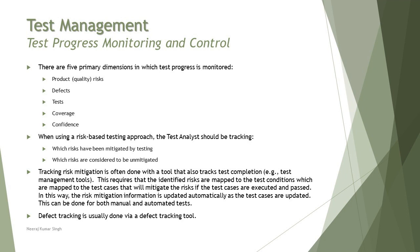If you are applying risk-based testing and managing risk, from the previous tutorial we understood risk identification, risk assessment, risk management, and risk mitigation. Mitigating risks requires tracking how many test cases have been written, how many more are required, how many have passed, and which test cases were associated with higher priority or severity risks. This can be tracked in two ways: which risks have been mitigated by testing and which risks are considered unmitigated.